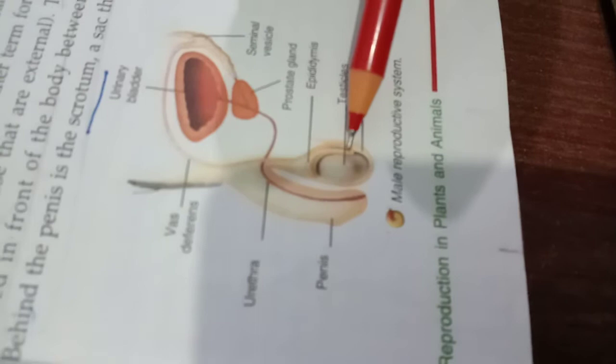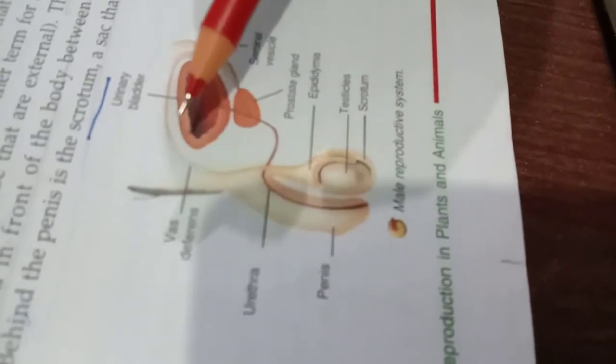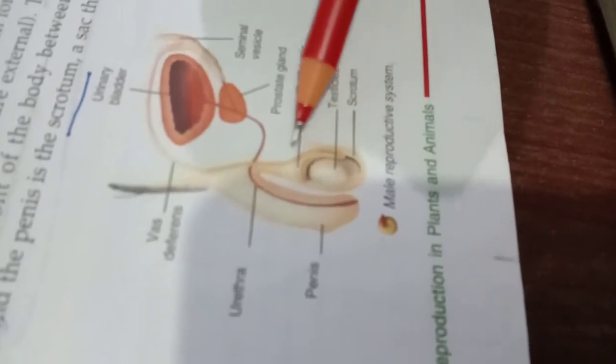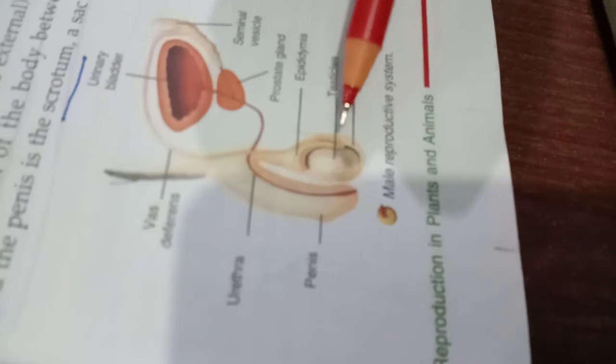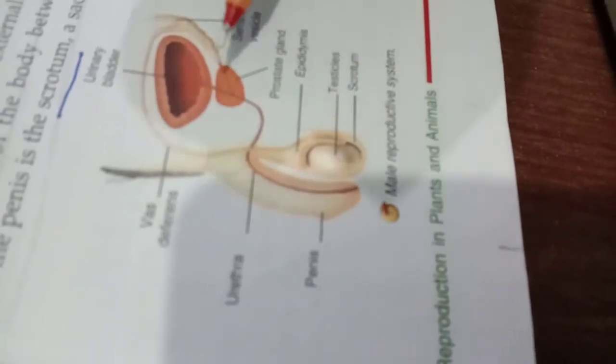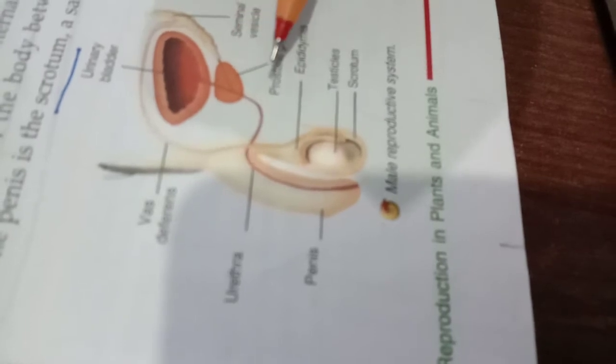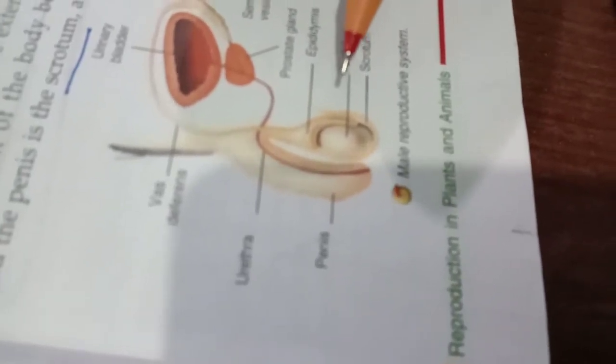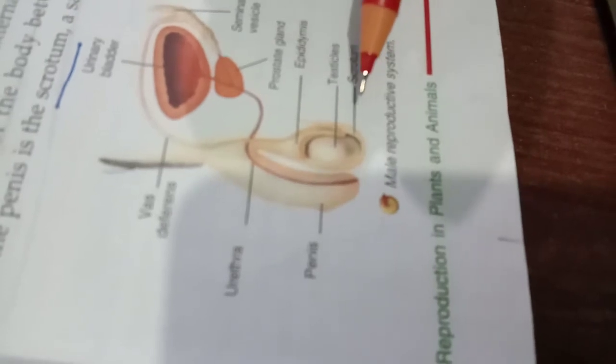And you know that in the humans, that is in the mammals, the male reproductive organ are found outside, that is externally below the abdominal organ, whereas the female reproductive system is found inside, that is within the body, below the abdominal organs.